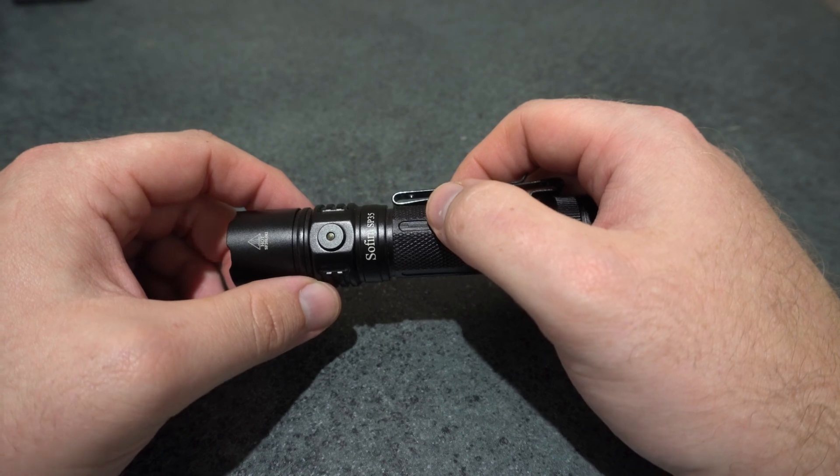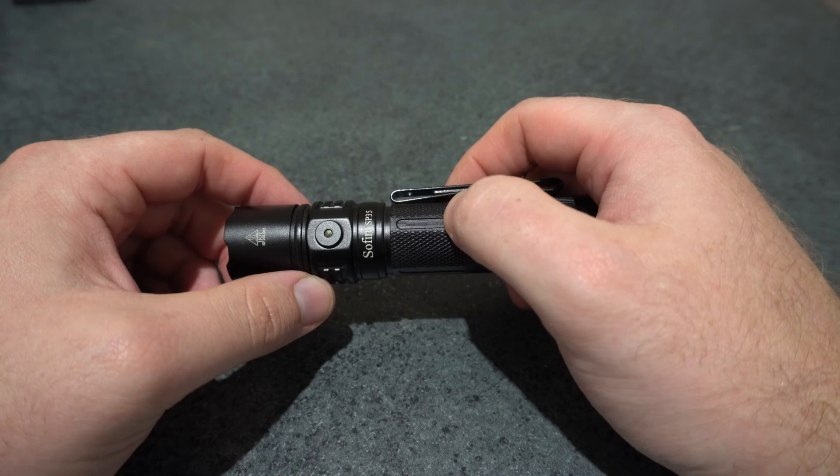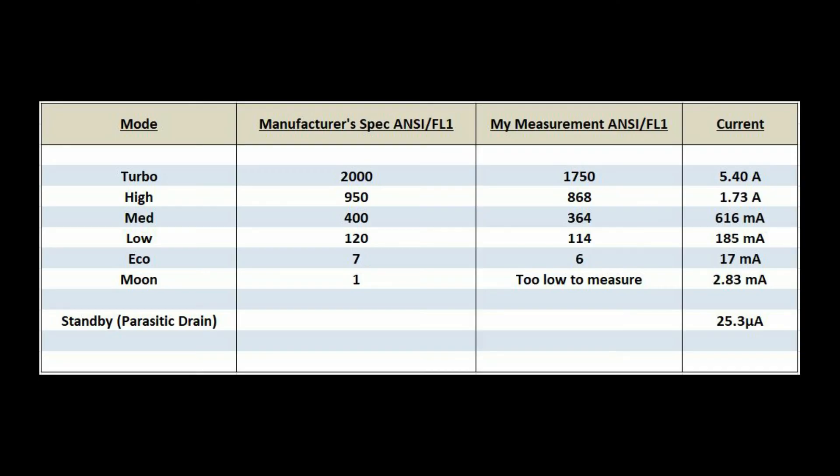There's a few measurements here that I'll throw up for you to look at. But the main one that I wanted to point out was the parasitic drain on standby, and that's very very low. So that's not going to drain your battery while you've got it turned off. It's a very very low drain. You're not going to have to worry about it.